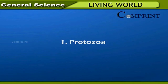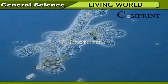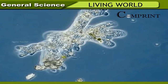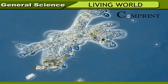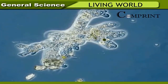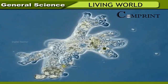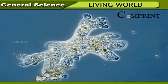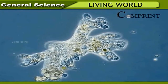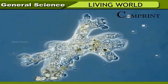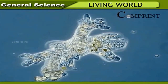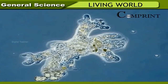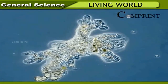Invertebrates — Protozoa: their body is made up of one cell. These are called unicellular or single-celled organisms and are visible only with the help of a microscope. Examples include Amoeba and Paramecium.